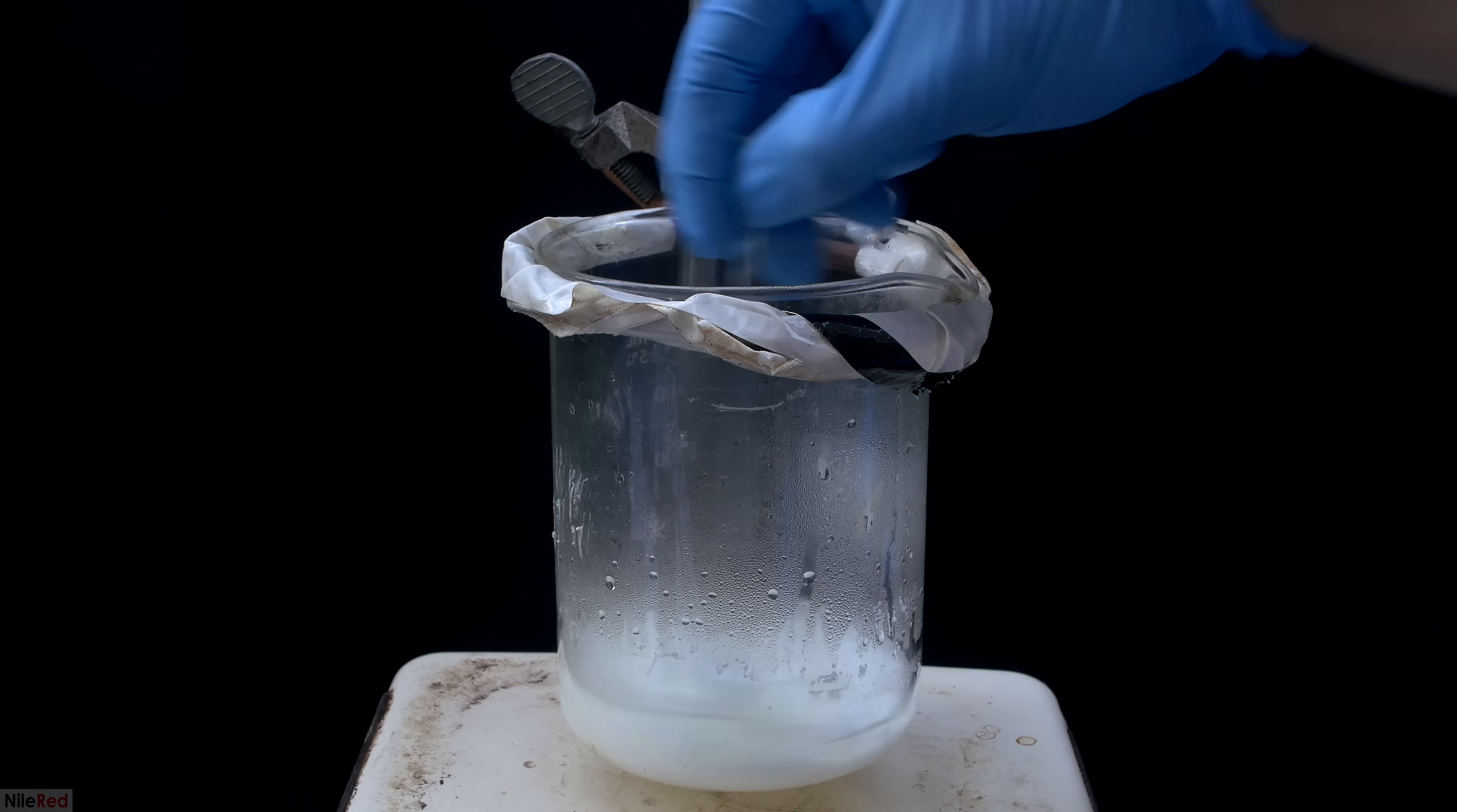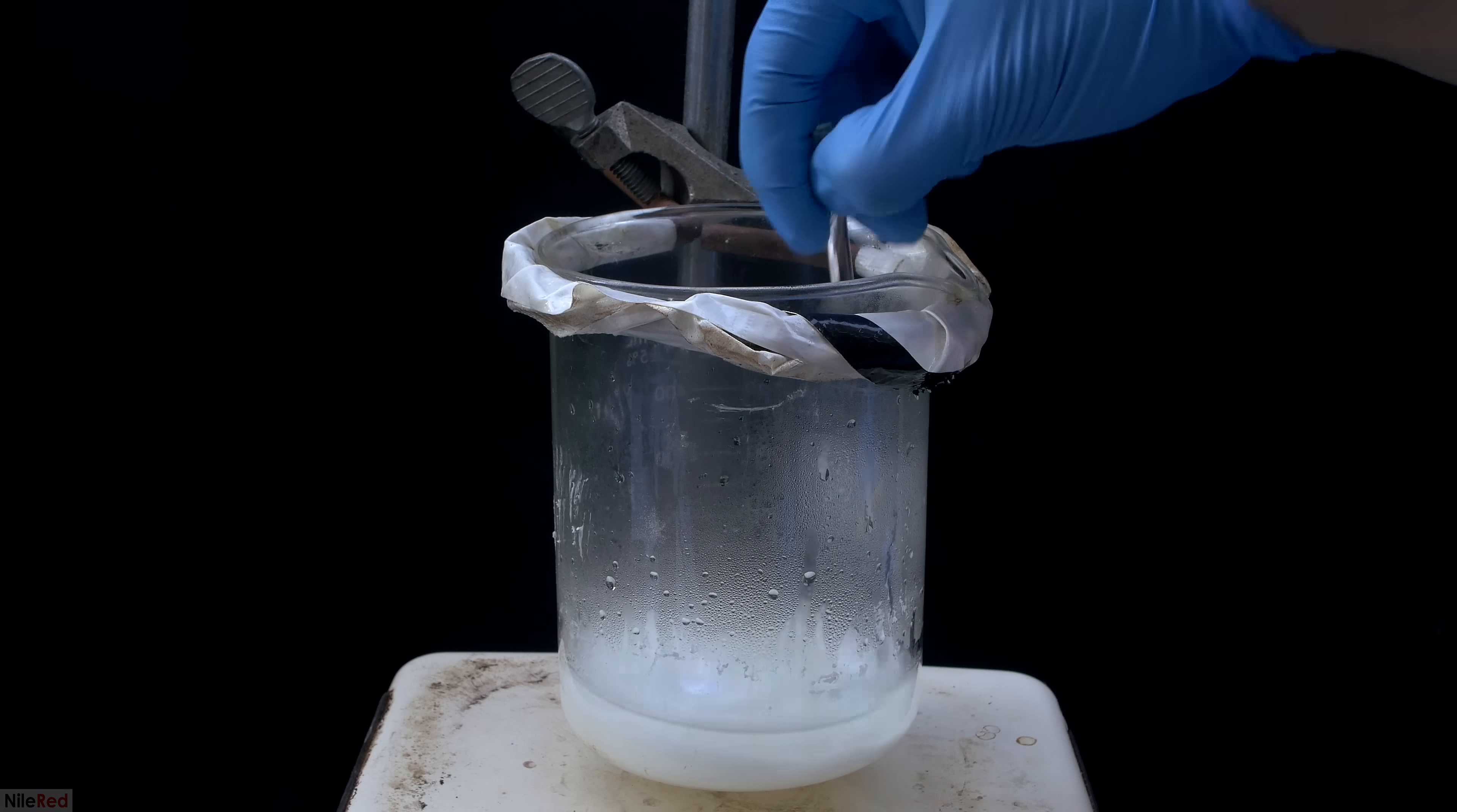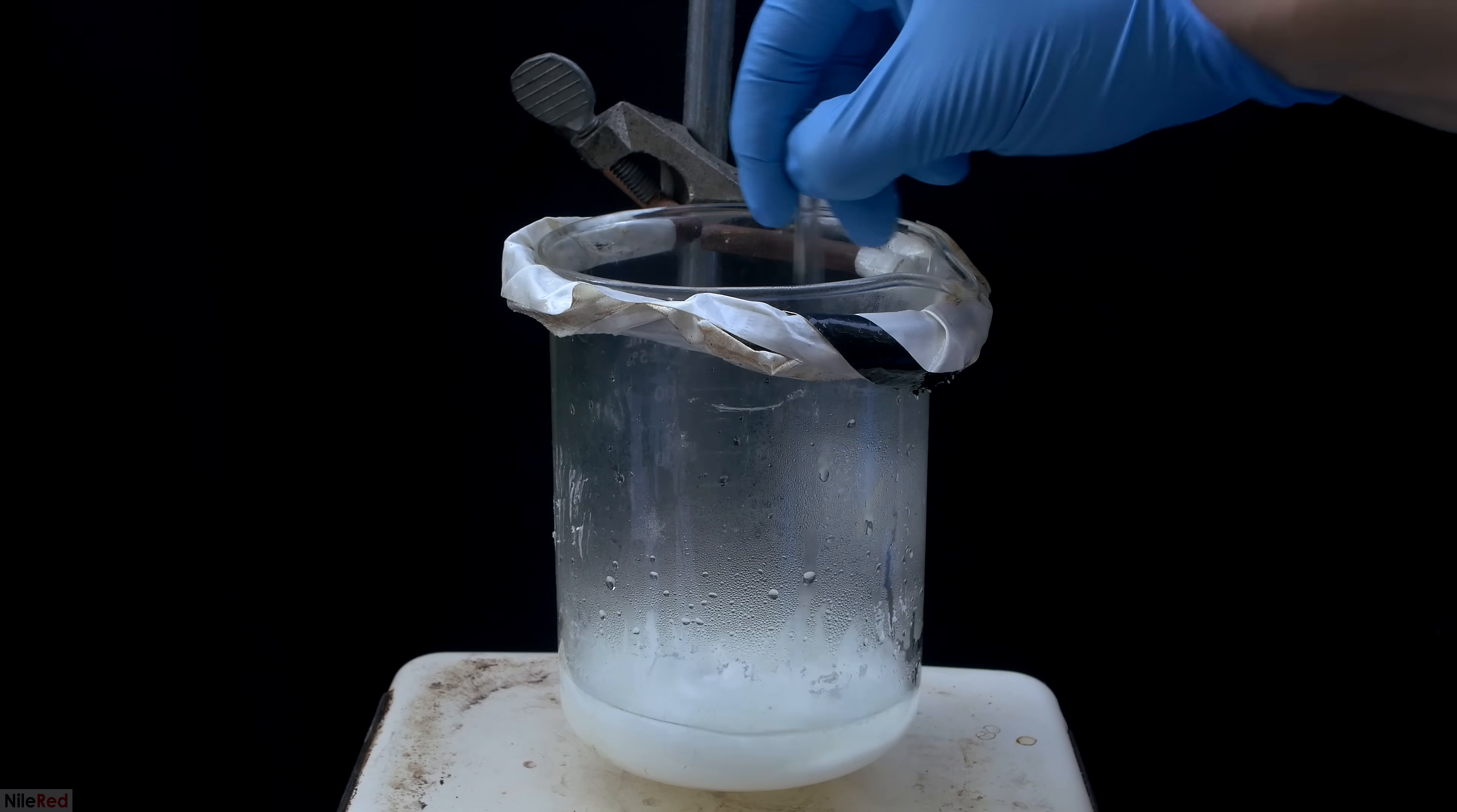As I continue to heat things up and stir, mercuric chloride precipitated out of solution. What we want to do now is continue heating things until all of the water is gone, and we're effectively left with a nice dry powder.